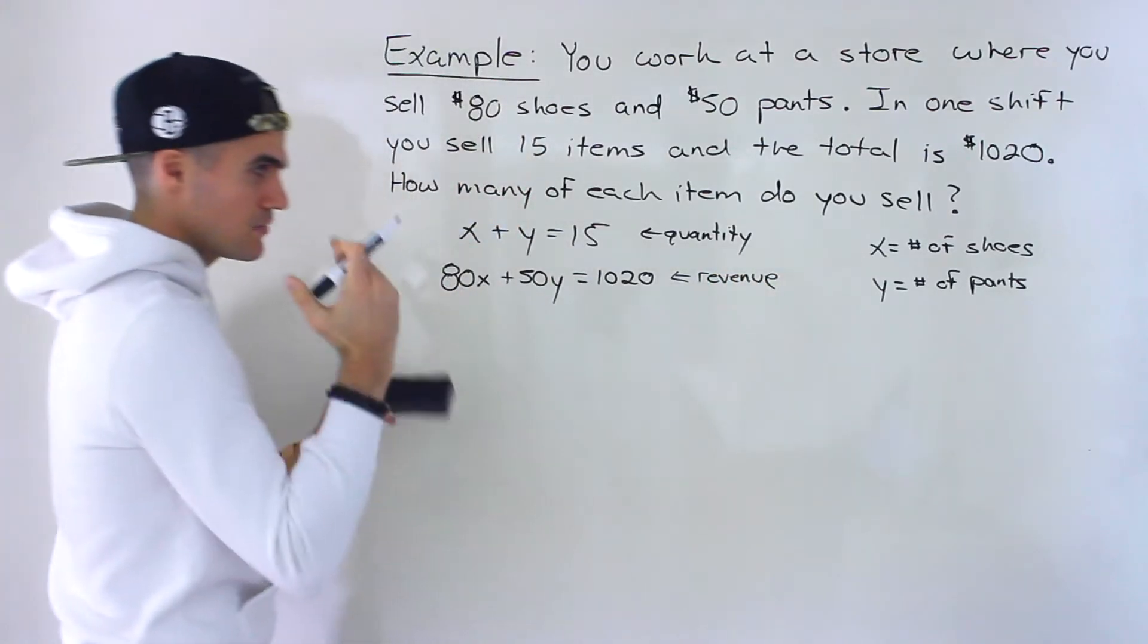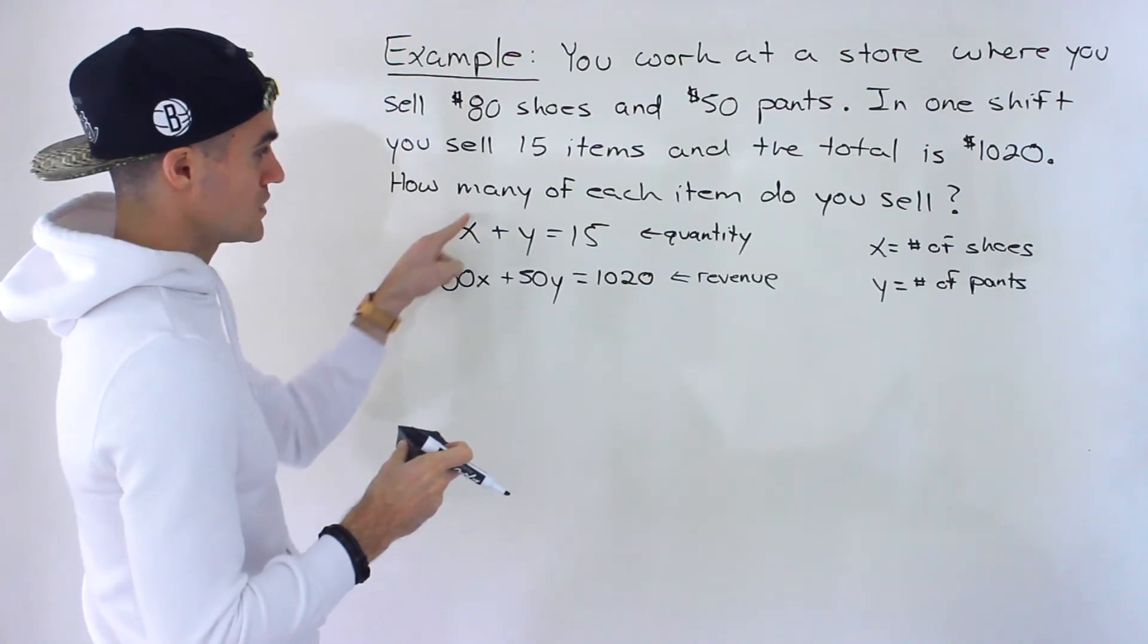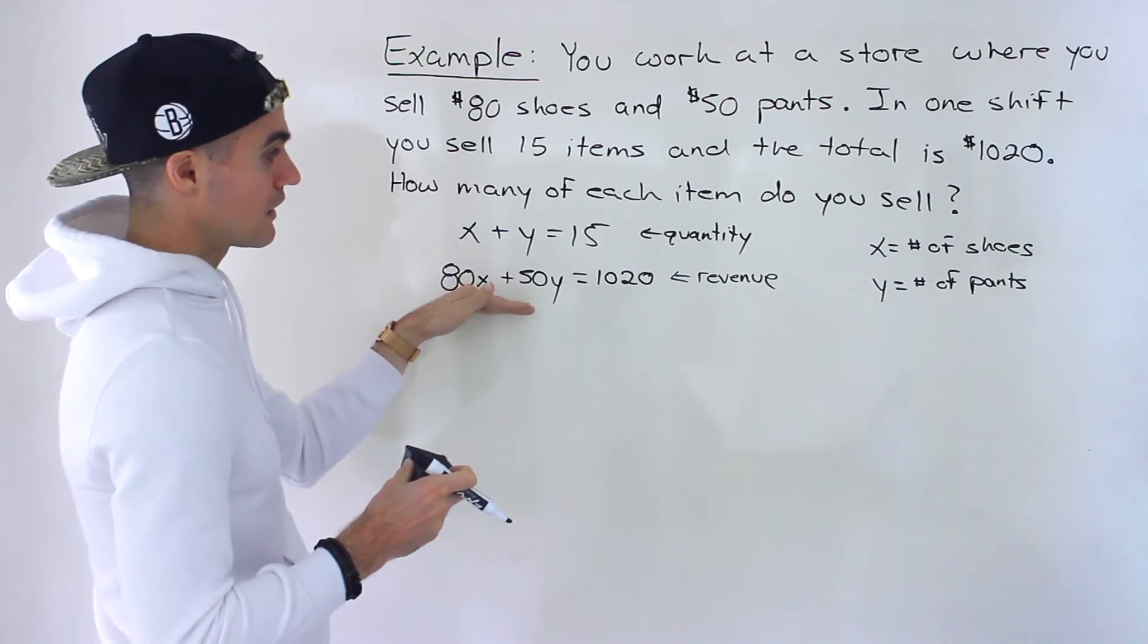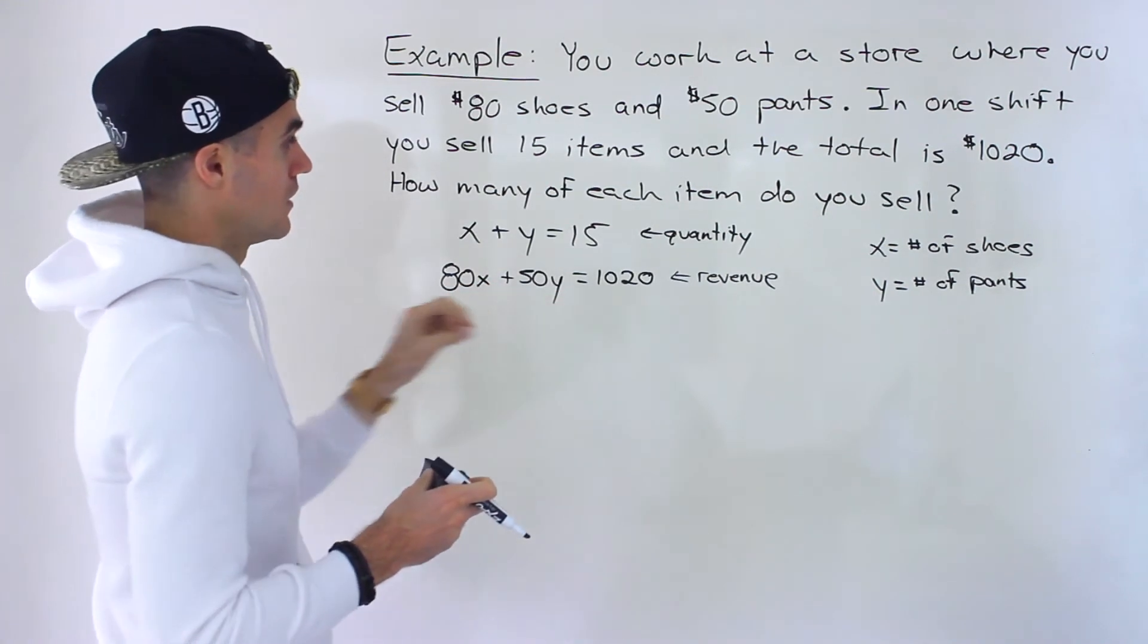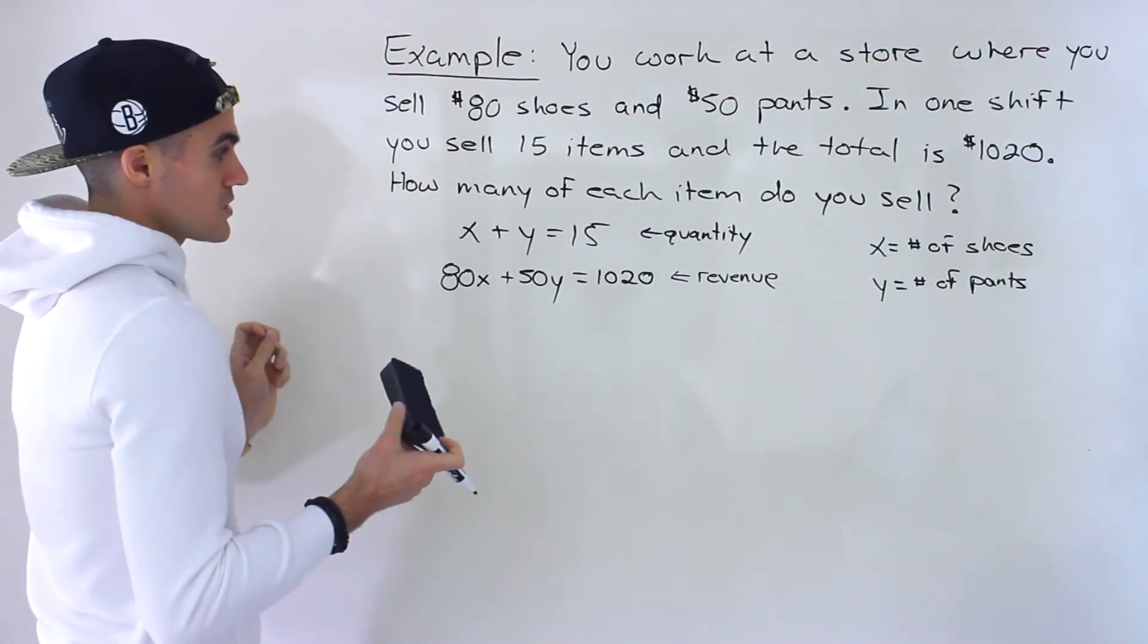So whenever you're setting these up, just keep in mind the differences. If you're dealing with quantity, then the left side is quantity, the right side is quantity. Here, the left side is revenue, the right side is revenue. So from here, we just have to solve.